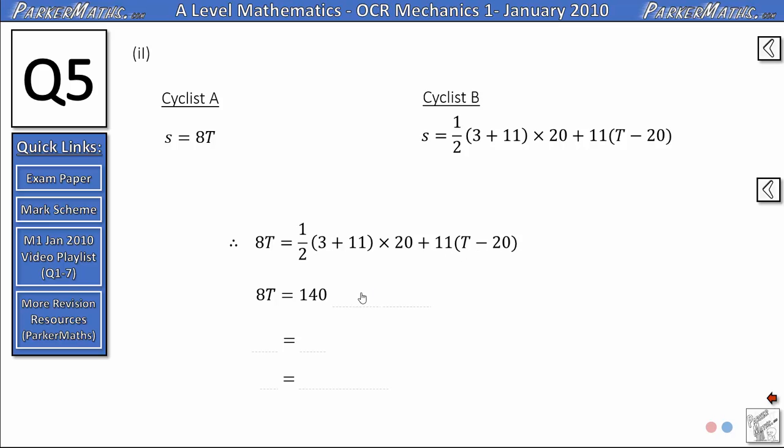Expanding the bracket on the right we get 11T and then we're going to subtract 220. To simplify further we'll subtract 8T from both sides and that will give us 3T on this side and we'll add the 220 and subtract the 140 to leave us with 80 on this side. From here we just need to do 80 divided by 3 and that gives us 26.7 if we round to 3 significant figures.